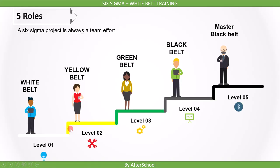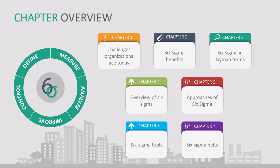And at the end, we will cover the Six Sigma belt systems, where you will come to know that after the Six Sigma White Belt, what you should do. So, at the end of this course, you are going to understand all of these topics. A screenshot of this slide is attached with this lecture. Please keep it with you to check your progress.